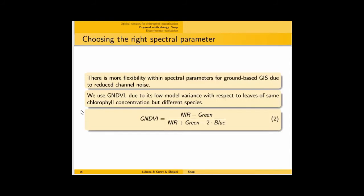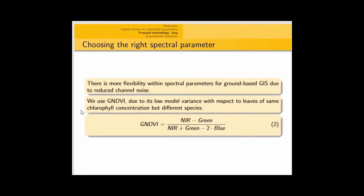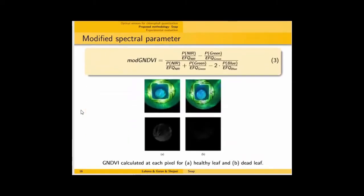Since we are now done with the major issues with using cameras, we can now choose a particular spectral parameter as needed. While most of the applications before used NDVI, we are preferring to use some other parameter for we believe that ground-based GIS can allow for more flexibility. So, based upon literature, we found this parameter, GNDVI more relevant for it allows low model variance with respect to leaves of same chlorophyll concentration by different species.